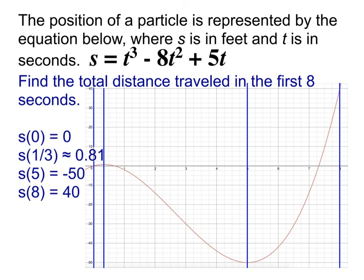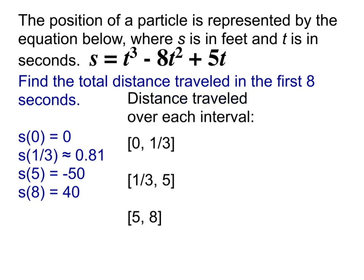What you don't want to do here is just add up the position values, because some of them are positive and some are negative, and that would give you a biased result. For total distance traveled, we really care about the absolute values. Between 0 and 1/3, how far did we travel? That's 0.81 — because we went from 0 up to 0.81. Between 1/3 and 5, we went from positive 0.81 down to negative 50, so the distance traveled is 50.81. I would never say negative 50.81 here because I'm talking about distance traveled, not position.